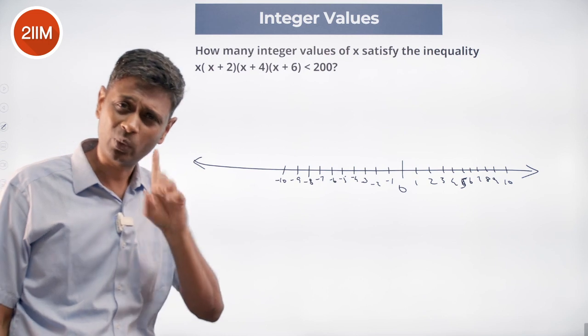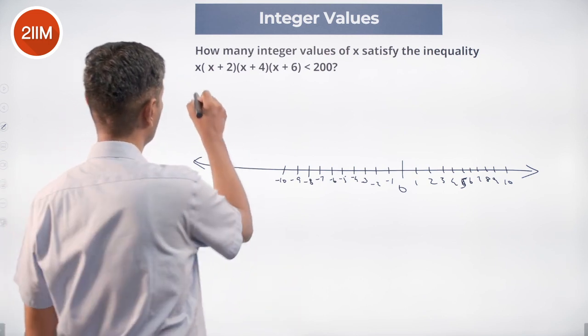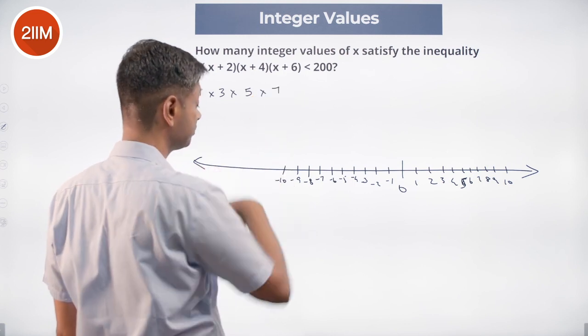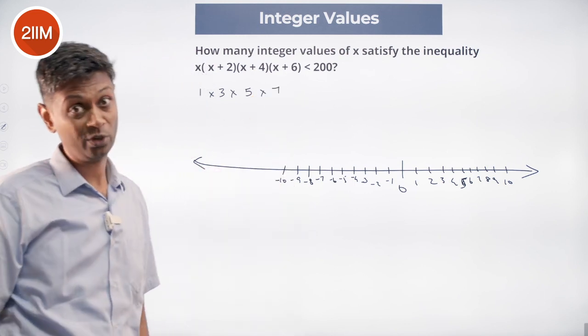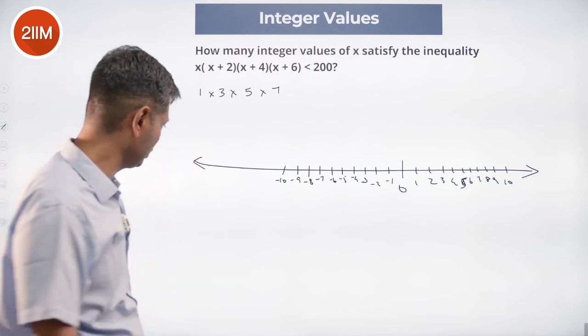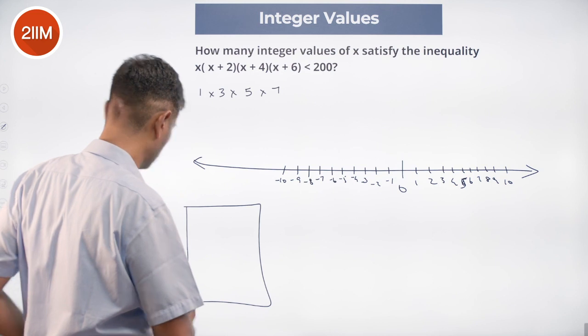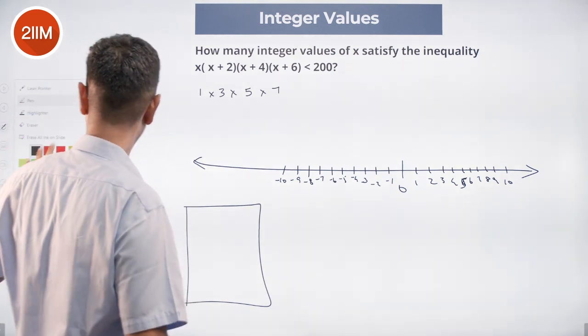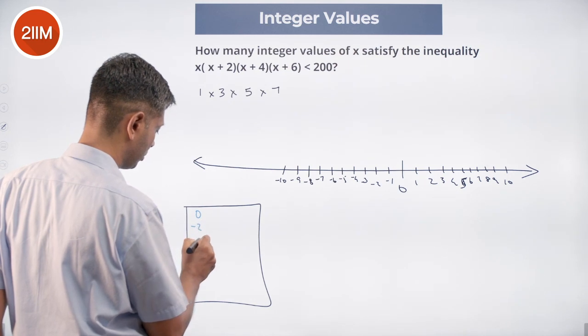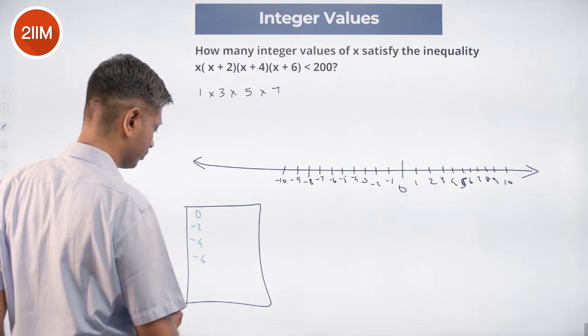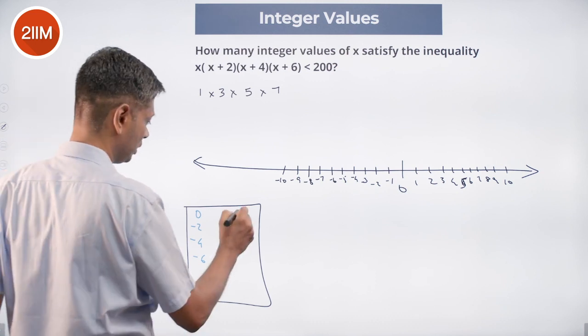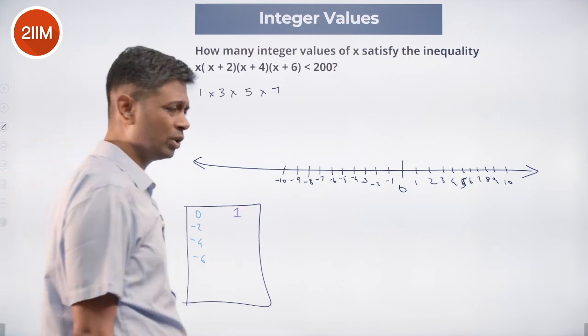And I say it should be less than 200. I am going to substitute x equal to 1. So 1 into 3 into 5 into 7. So 1 works. 1 into 3 into 5 into 7. 3 into 5 is 15, into 7 is 105. So numbers that work for me, numbers I am going to put in a bag. I really like 0, minus 2, minus 4, minus 6. These are all numbers where it goes to 0. And then I put 1. 1 also works.